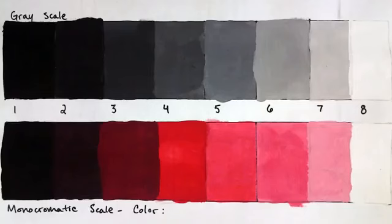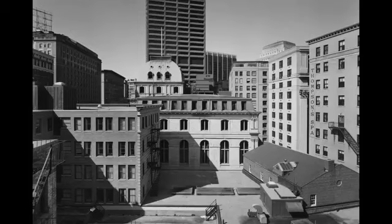Any hue or tone has a similar scale from dark to light. Different values are created by lightening the hue — in this case, adding white to it — or by darkening it with black. When an artwork has many tones in between black and white, it is considered low contrast.